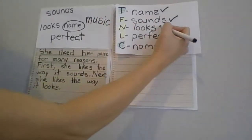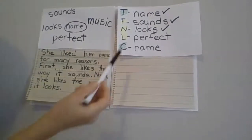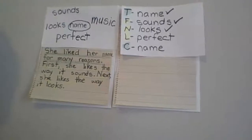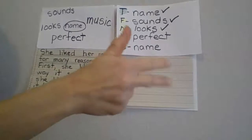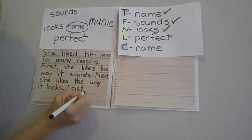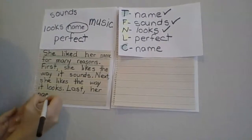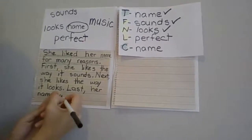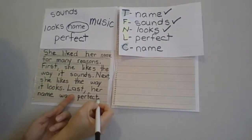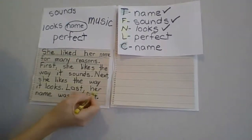Now I'm going to check it off my plan. I'm ready for our last big idea. It says 'last, perfect,' so I need to write that in a complete sentence: 'Last, her name was perfect.' Say it with me — last, her name was perfect. Write it with me, starting with a capital for 'last,' comma, her name was perfect. Period at the end. We'll underline that with yellow again to match our plan.